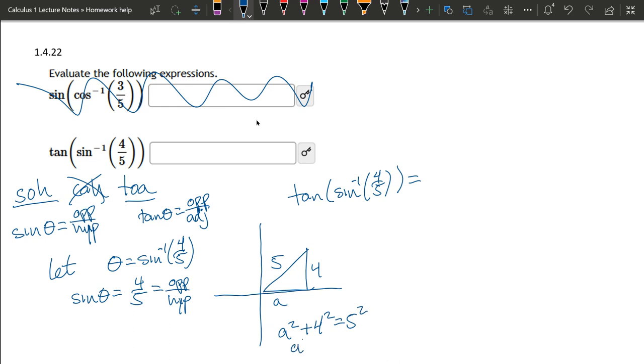Square all these out. A squared equals 5 squared is 25. 4 squared is 16. So you just subtract that 16 over.